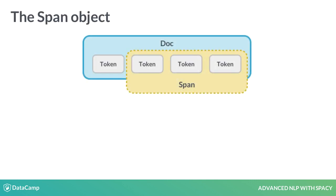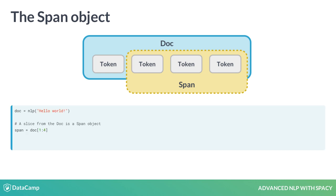A span object is a slice of the document, consisting of one or more tokens. It's only a view of the doc and doesn't contain any data itself. To create a span, you can use Python's slice notation.